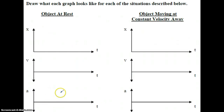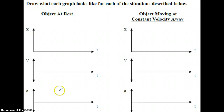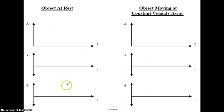Let's move on. For each of these motion scenarios, we're going to draw the XT, VT, and AT graph one right under the other, so that we have a good understanding of the differences between the graphs and what they communicate to us. We're going to start with an object at rest — start easy and work our way towards the harder scenarios.